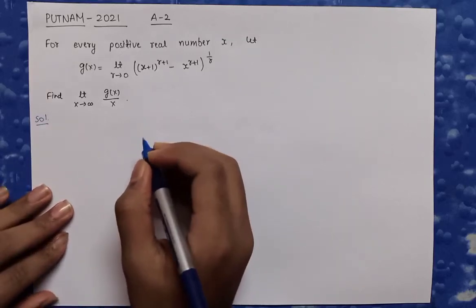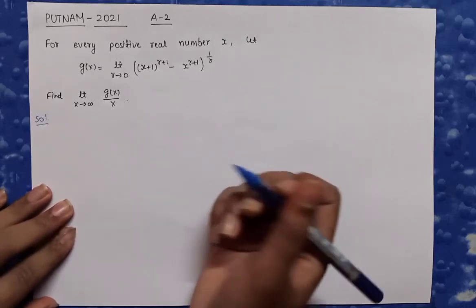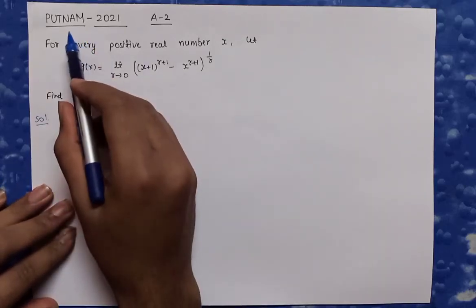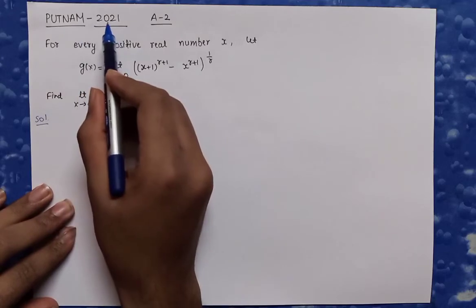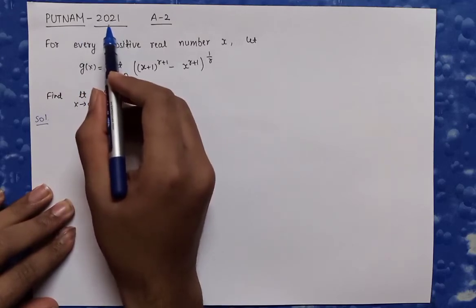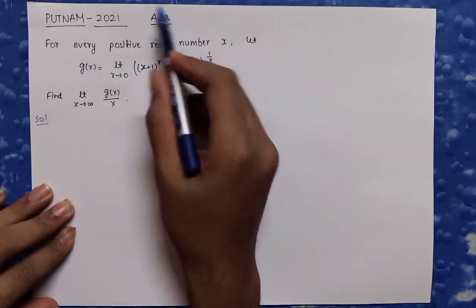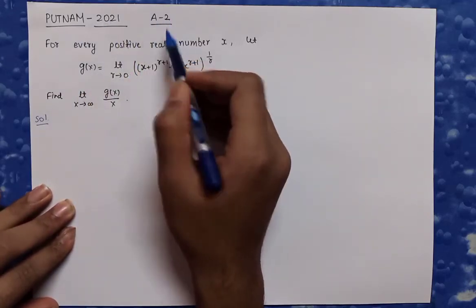Hello guys! Today we are going to solve a Putnam problem which was asked in 2021, and this problem was problem number A2 in that question paper.